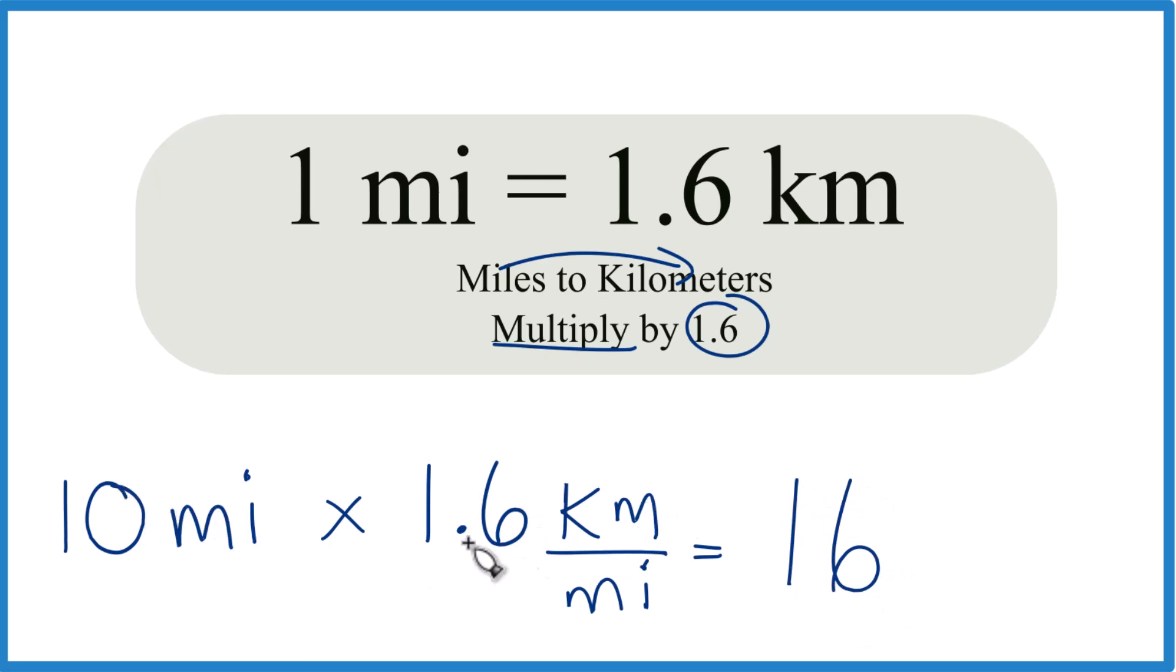We have miles on top and the bottom. Let's cancel those out. And 10 times 1.6 kilometers is 16 kilometers, or you could write 16.0. Let's just go with 16 kilometers.